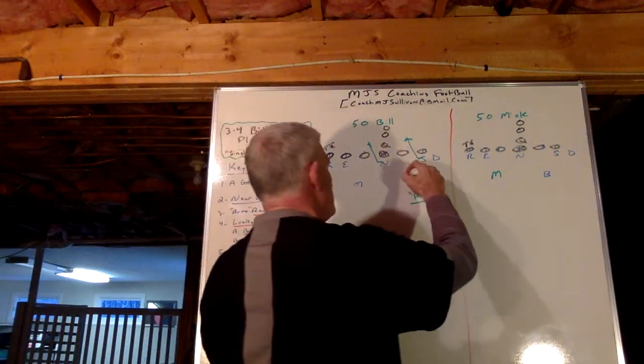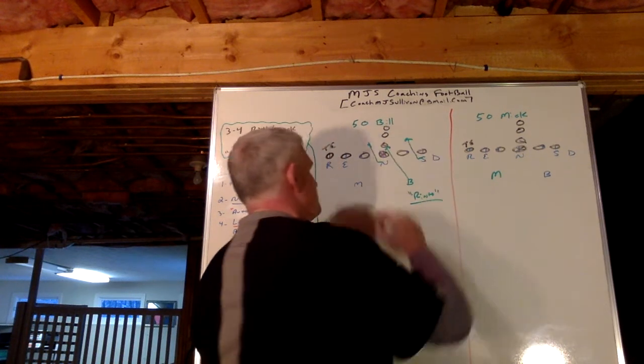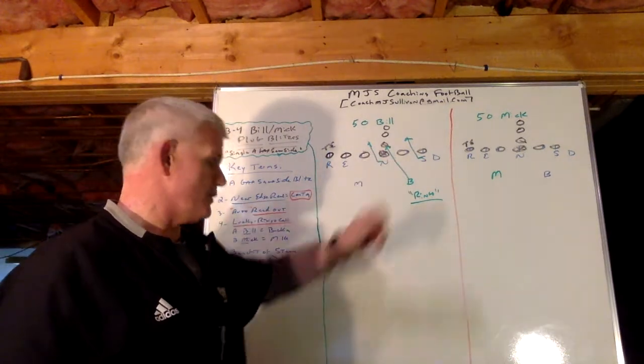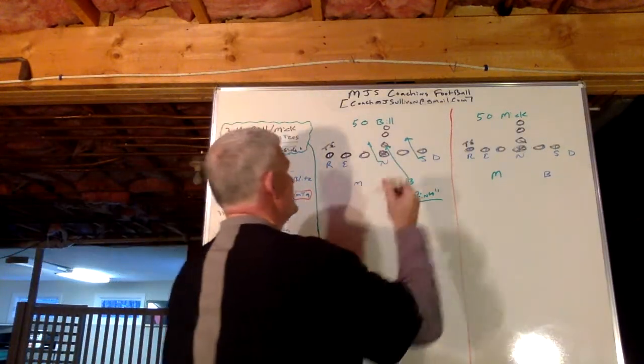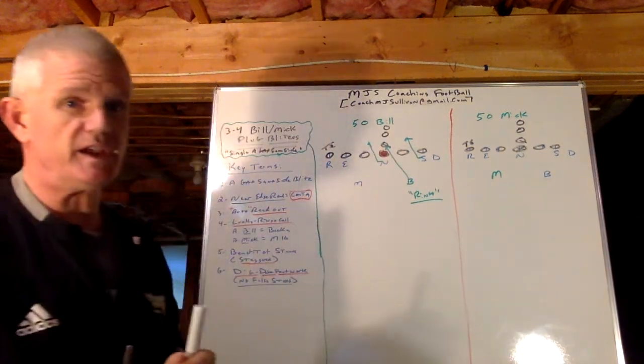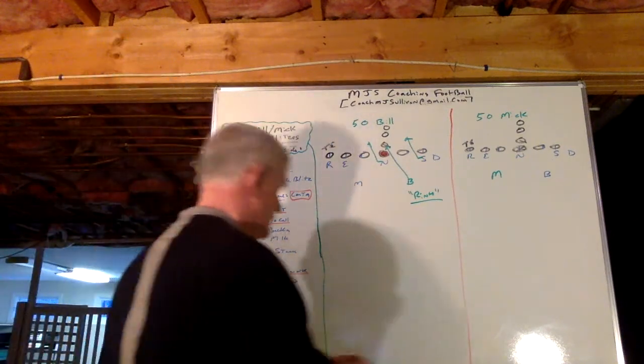Because now, the backer is plug blitzing the near edge of the center, because the center on any A gap blitz, the center is the designated blocker. That's the guy we're reading and reacting to.